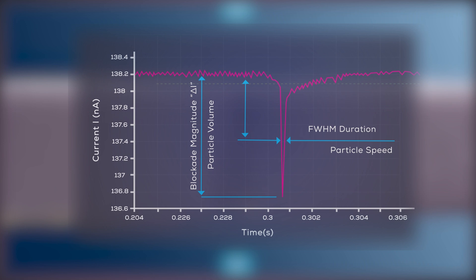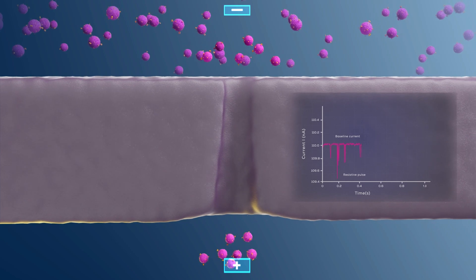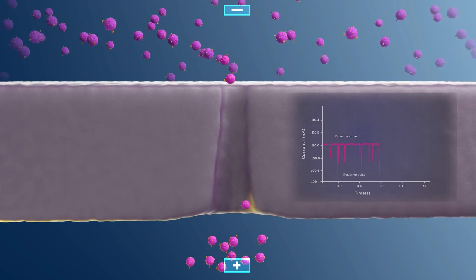The decrease in current is known as a blockade event. The magnitude of the blockade relative to the baseline is proportional to the volume of the particle, as a larger particle displaces more electrolyte solution. The amount of time it takes the particle to traverse the nanopore is called blockade duration and indicates how fast the particle moves through the nanopore. This time can be related to the charge of the particle. Finally, the number of blockades that occur per unit time is proportional to the concentration of particles in the solution.